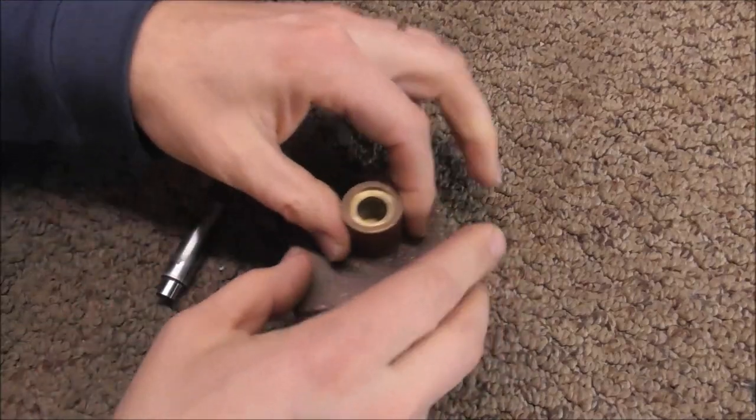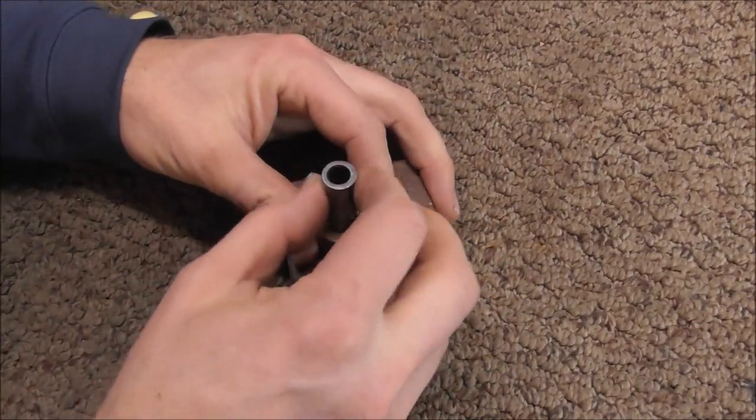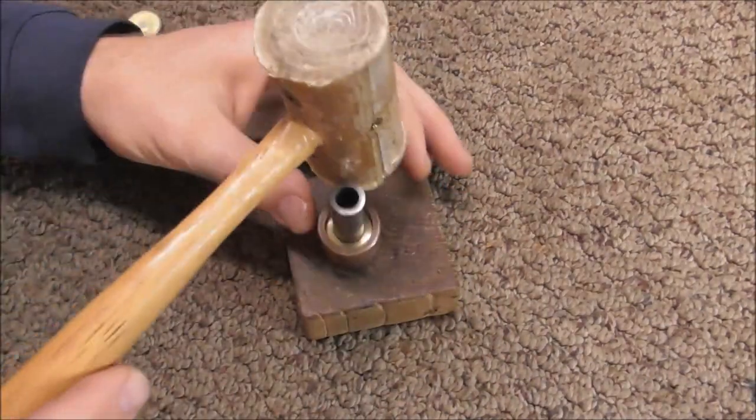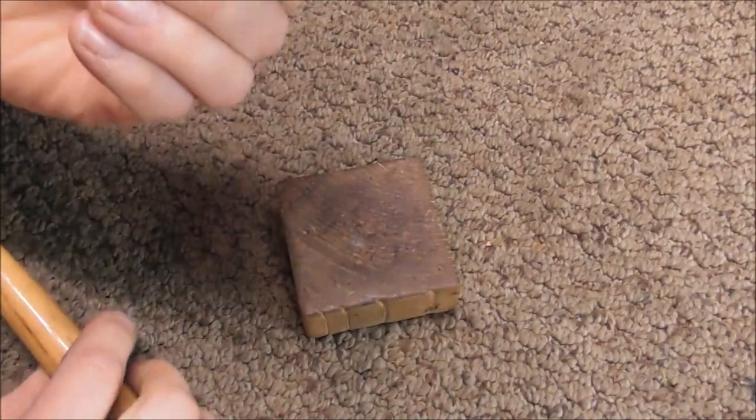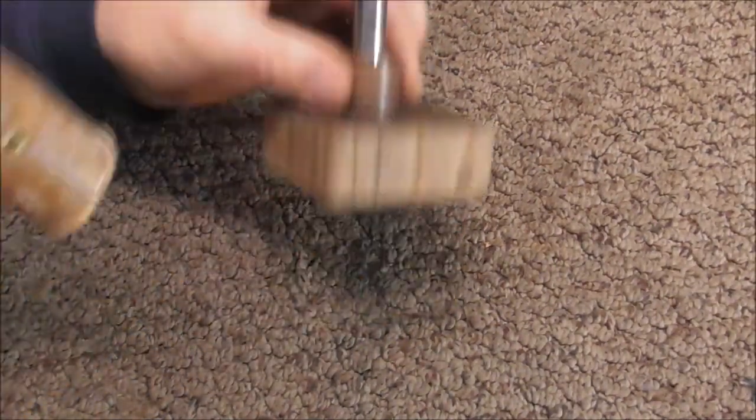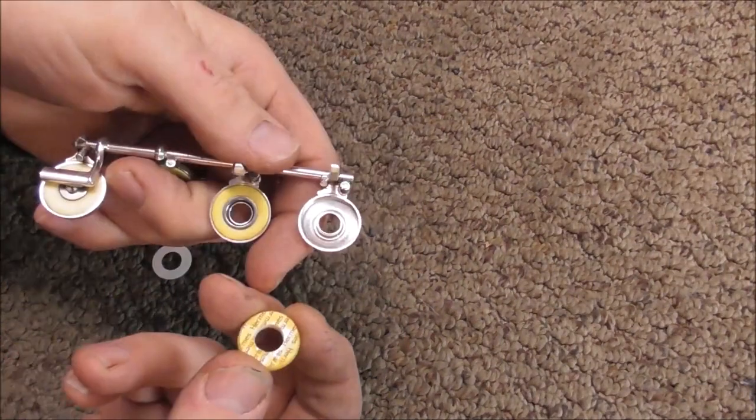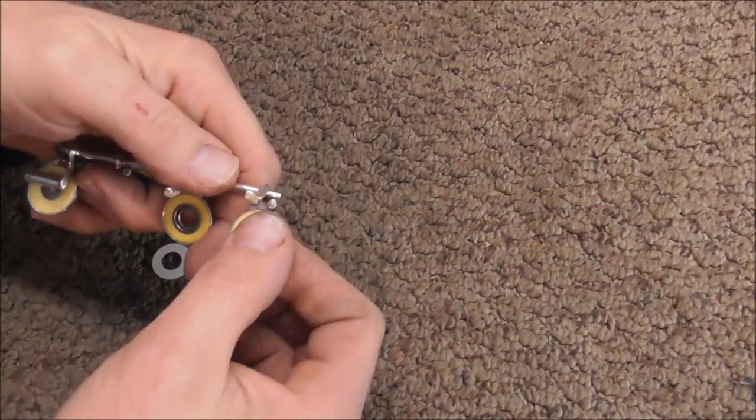Pick the pad, put it into the pad cutter, and then give this a couple good hits. And another one. There we go. Then you have a pad that will fit into an open hole flute key.